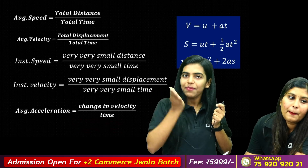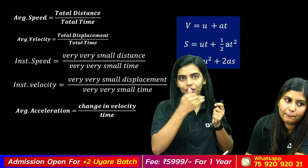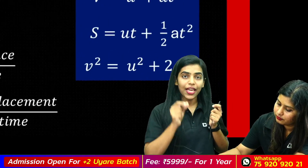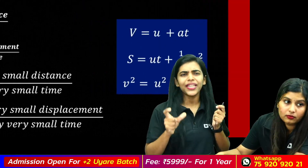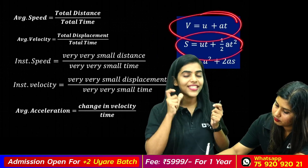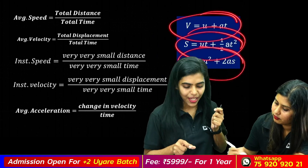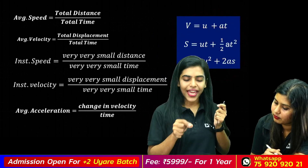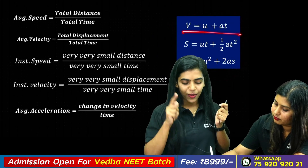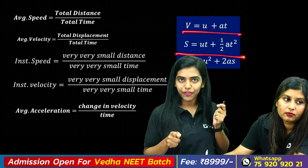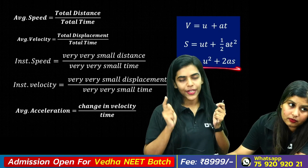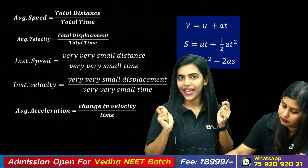In this chapter, for questions and numericals, the three equations of motion are important: V equals U plus AT; S equals UT plus half AT squared; V squared equals U squared plus 2AS.